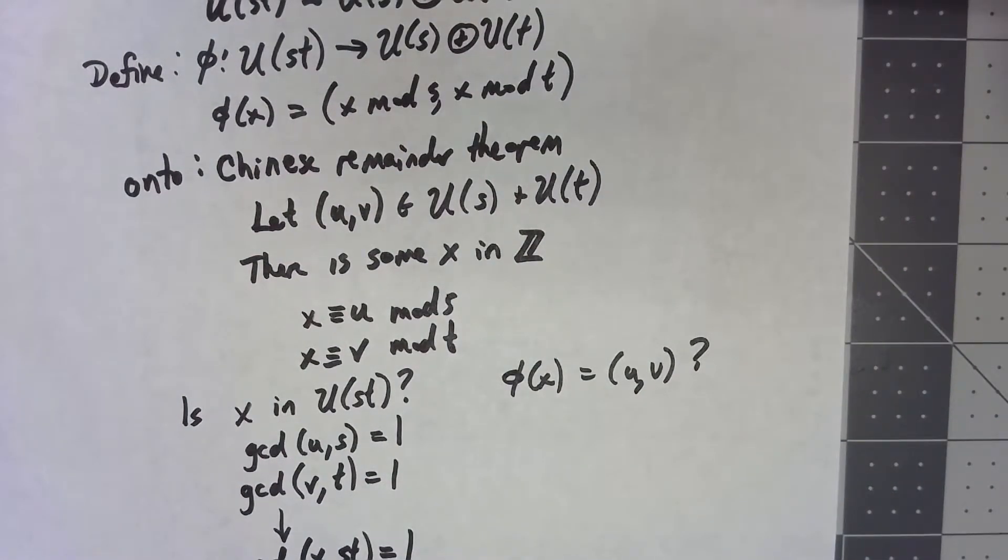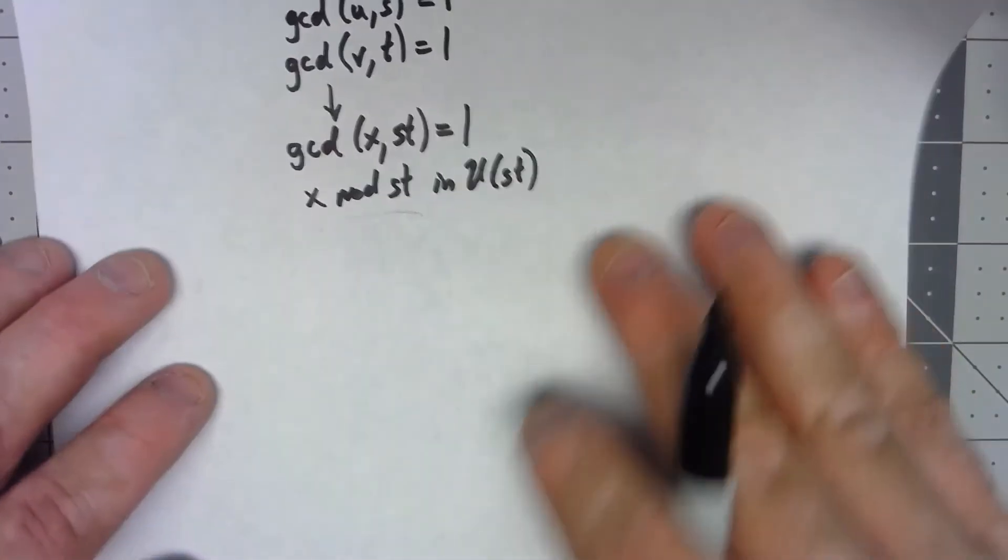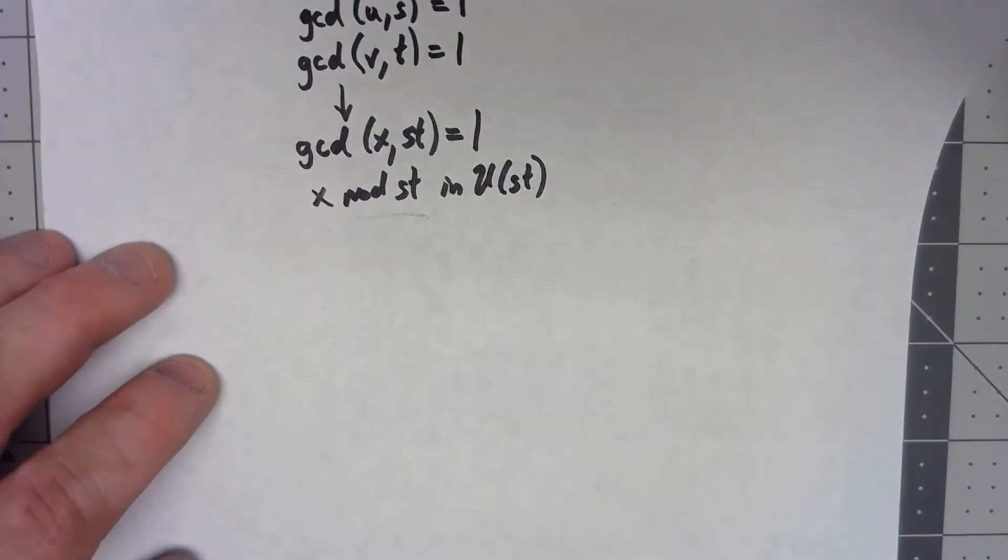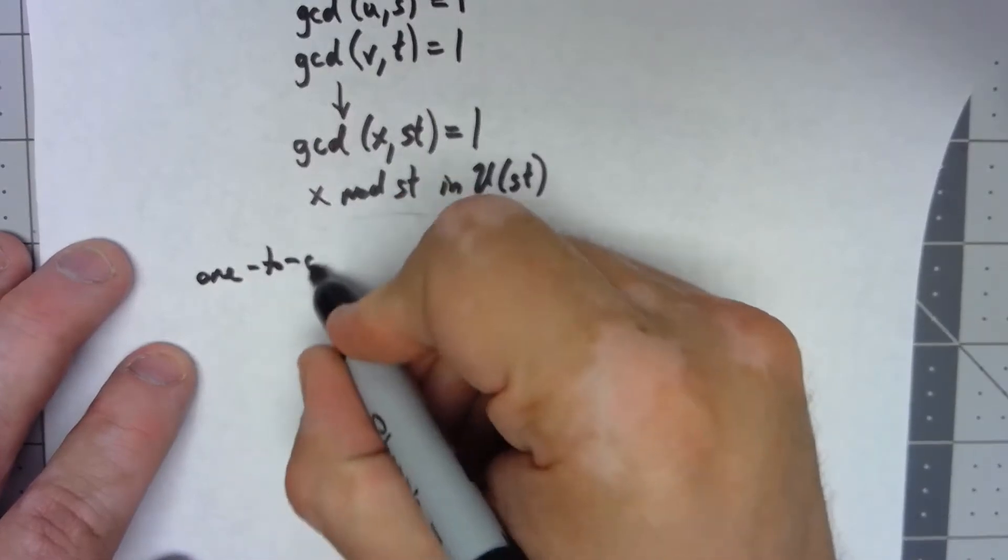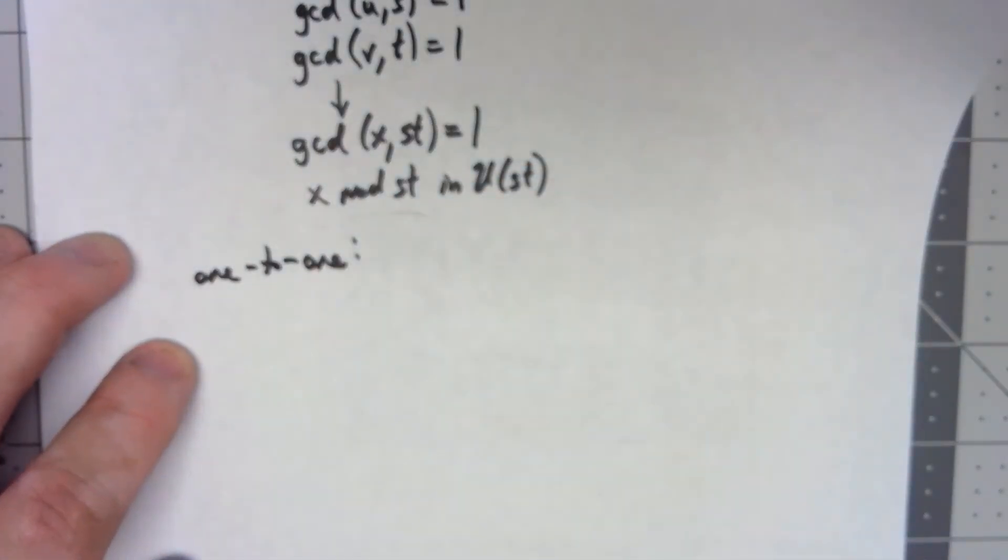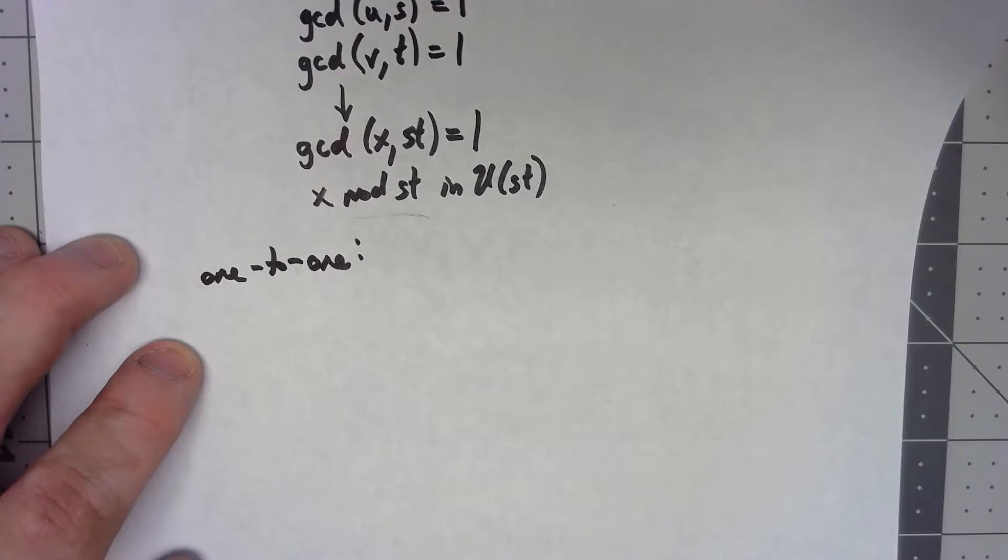Fortunately, the other bits are a little bit easier. So the next thing, is it 1 to 1?